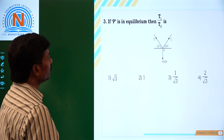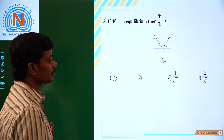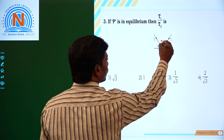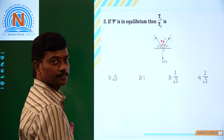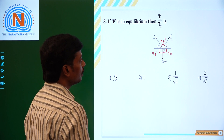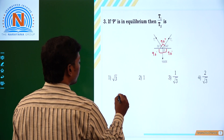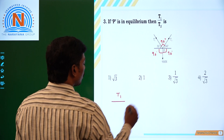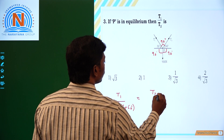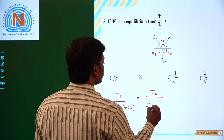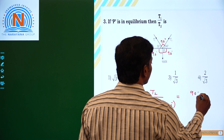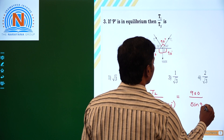For the third question: if P is in equilibrium, then T1 by T2 is — here the angle is 60 degrees and here it is 30 degrees. The angle between T1 and T2 is equal to 90 degrees, and this angle is also equal to 90 degrees. According to Lamy's theorem: T1 by sine of 90 plus 60 degrees is equal to T2 by sine of 90 plus 30 degrees, is equal to 900 by sine of 90 degrees.